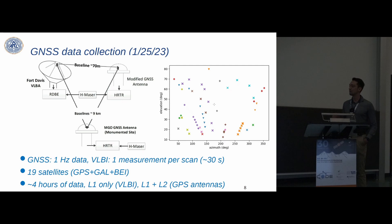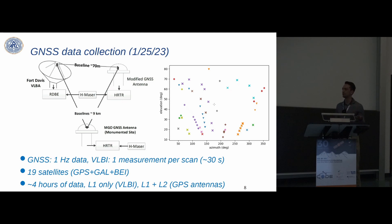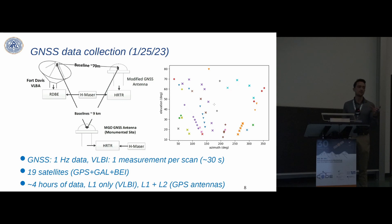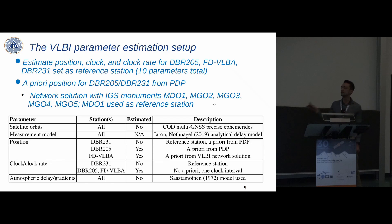For GNSS processing, we get pseudoranges and carrier phases at one hertz cadence. For VLBI processing, we coherently integrate across each observation scan, getting one group delay and one phase delay per approximately 30-second scan — the duration the radio telescope stares at a particular GNSS satellite. We collected four hours of data: L1 only for the radio telescope, L1 plus L2 for the GNSS antenna, enabling PPP and other processing.